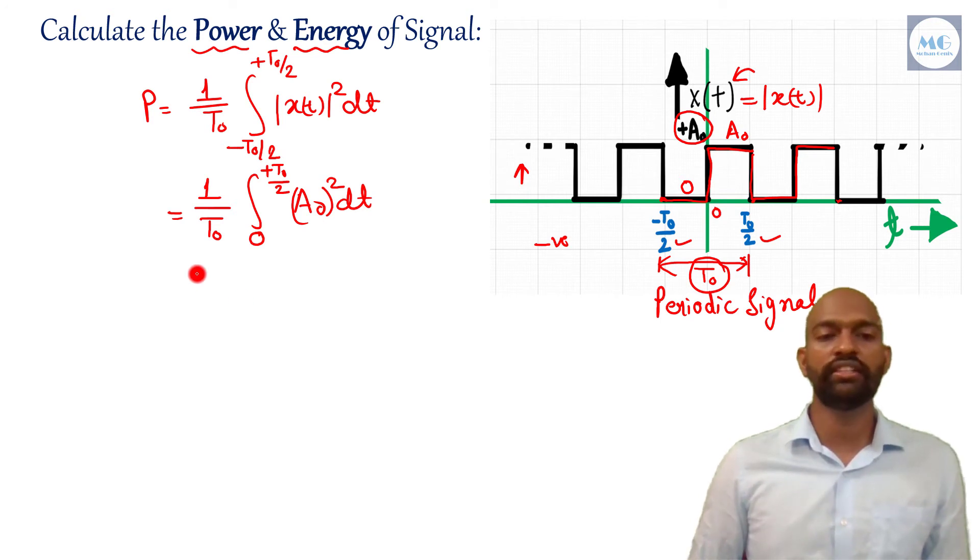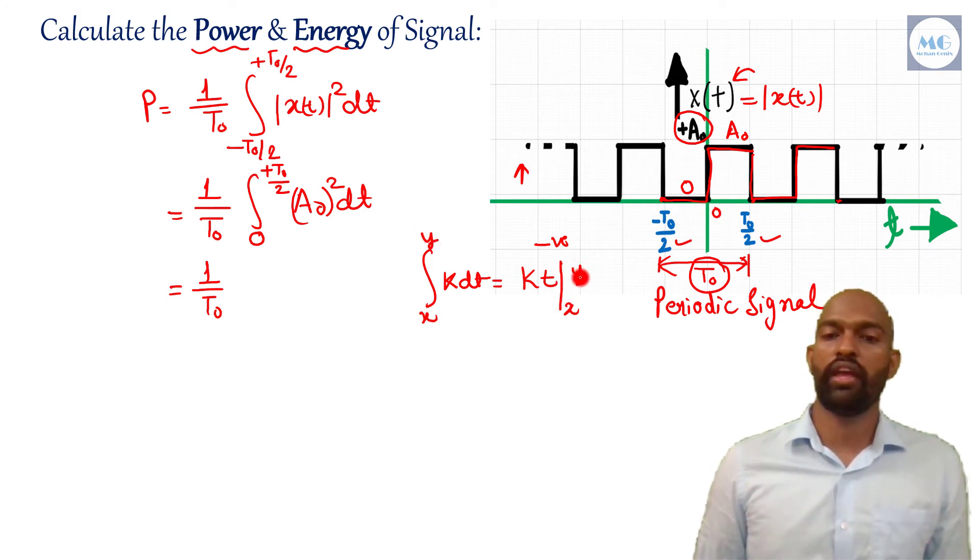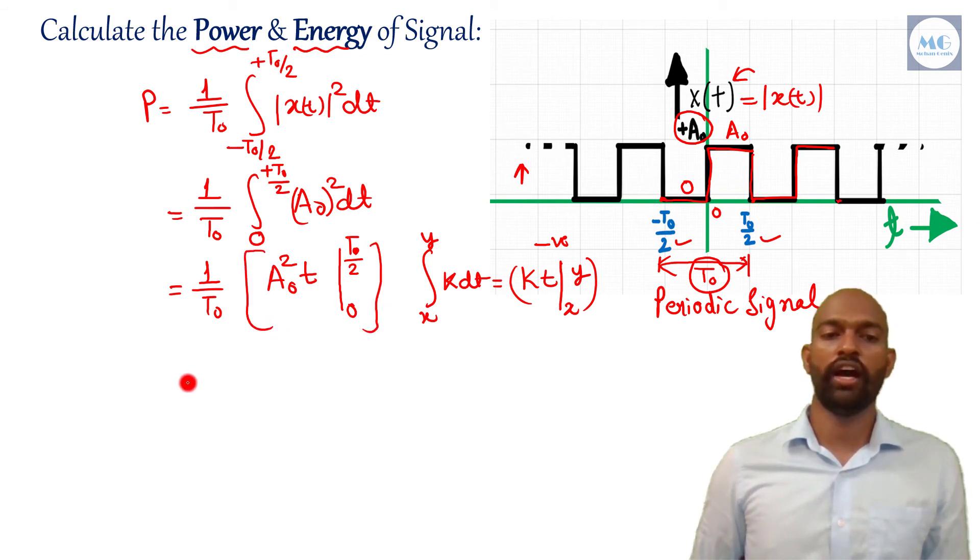Now we just have to integrate this. So how we can integrate this? 1 by t0, integration of any constant quantity is, in case you have forgotten it, kt. If here interval is from x to y, then we can write here x to y. So this is the integration of any constant quantity, same we have to apply here. So in place of k, here it is a0 square, so what we have to write, a0 square t. And what are the limits, from 0 to plus t0 by 2, so just we have to write from 0 to plus t0 by 2.